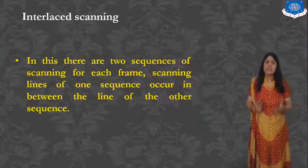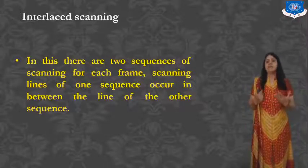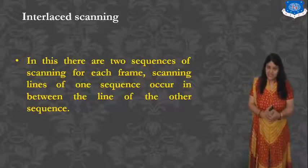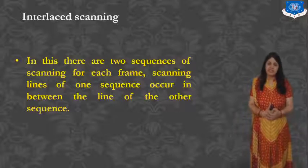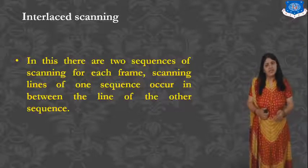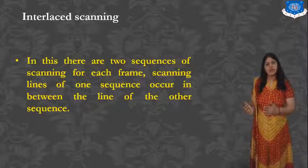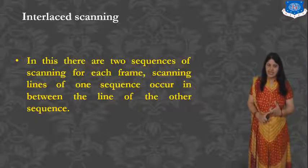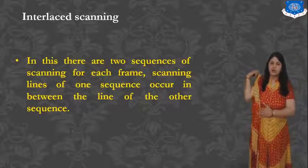Scanning can be of two types: Progressive Scanning and Interlaced Scanning. In Progressive Scanning, we start reading a line from the left hand side corner to the right hand side, then return to the beginning of the second line and proceed to the end of that line.